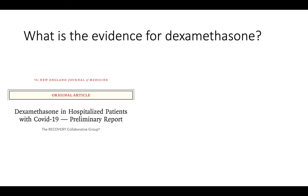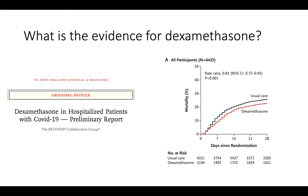What is the evidence for dexamethasone? This seminal publication was an unblinded, open-label clinical trial with no placebo and multiple drug arms. Focusing on dexamethasone: about 2,000 people received dexamethasone compared to 4,000 who got usual care. On the Kaplan-Meier curve with mortality on the Y-axis, patients randomized to dexamethasone had lower mortality than those randomized to usual care — approximately a 20% reduction in the relative risk of death.